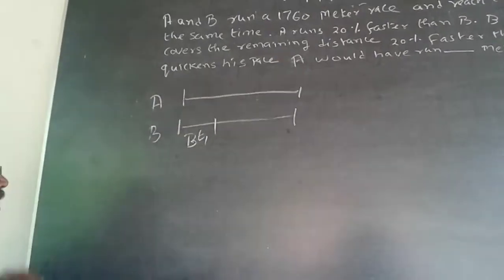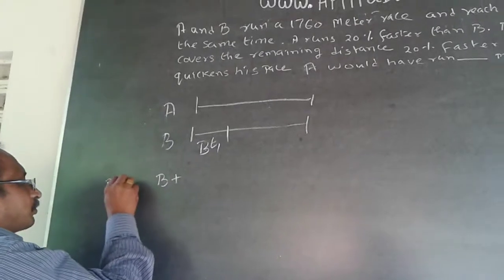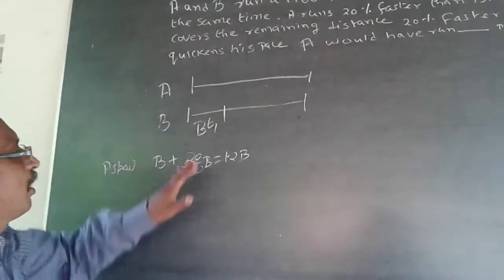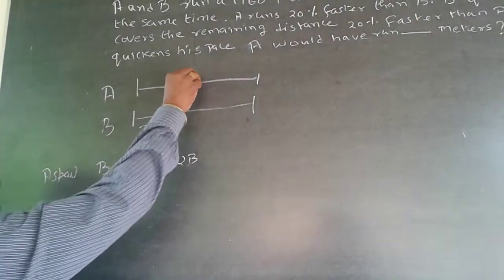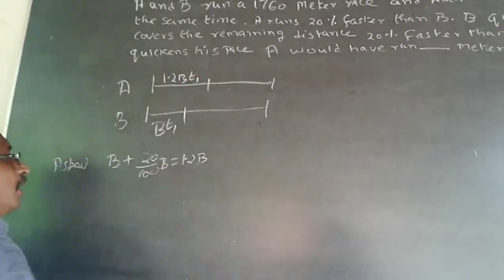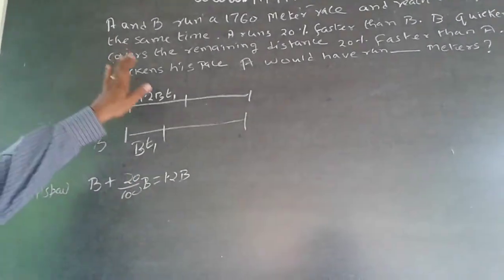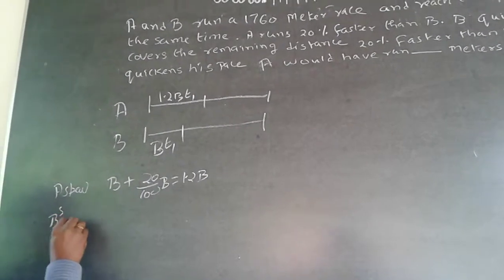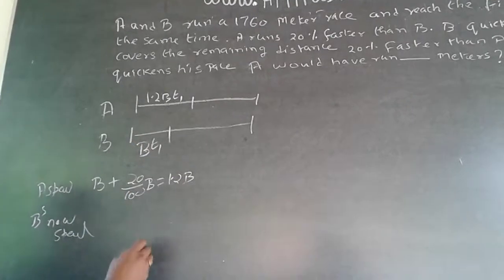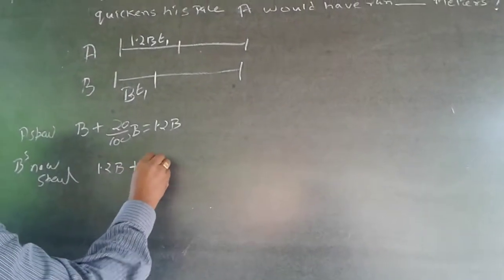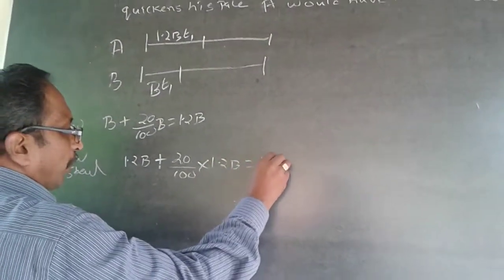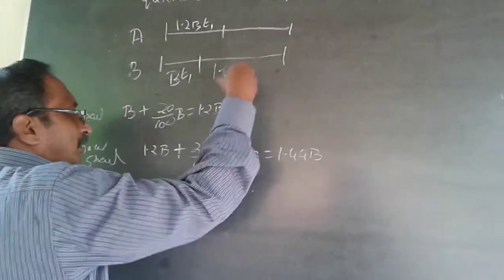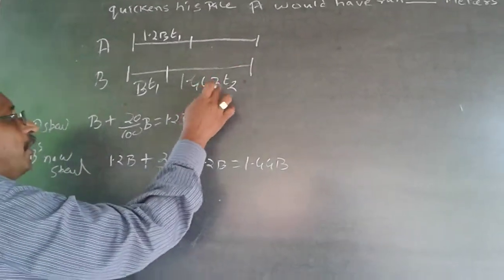A is 20% faster, so A's speed is 1.2B. Then B increases his speed to 20% faster than A. Because A's speed is 1.2B, B's new speed will be 1.2B + 20% of 1.2B, which is 1.2B + 20/100 of 1.2B. This equals 1.44B. So after quickening, B is running at 1.44 times his original speed. The time for the second phase is T2, so B covers 1.44B × T2.